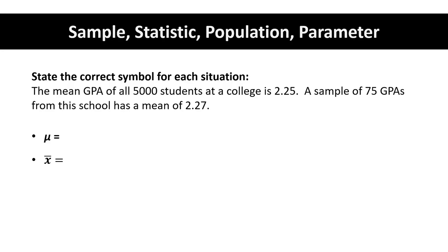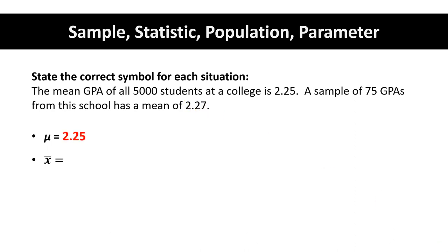Lesson objective: state the correct symbol for each situation. The mean GPA of all 5,000 students at a college is 2.25. A sample of 75 GPAs from this school has a mean of 2.27. The Greek letter mu is a parameter. The parameter here is 2.25, because that value describes the population — all 5,000 students. X-bar is a statistic; it is the sample mean. For this sample of 75 students, the GPA was 2.27. So the population mean mu is 2.25, and the sample mean x-bar is 2.27.